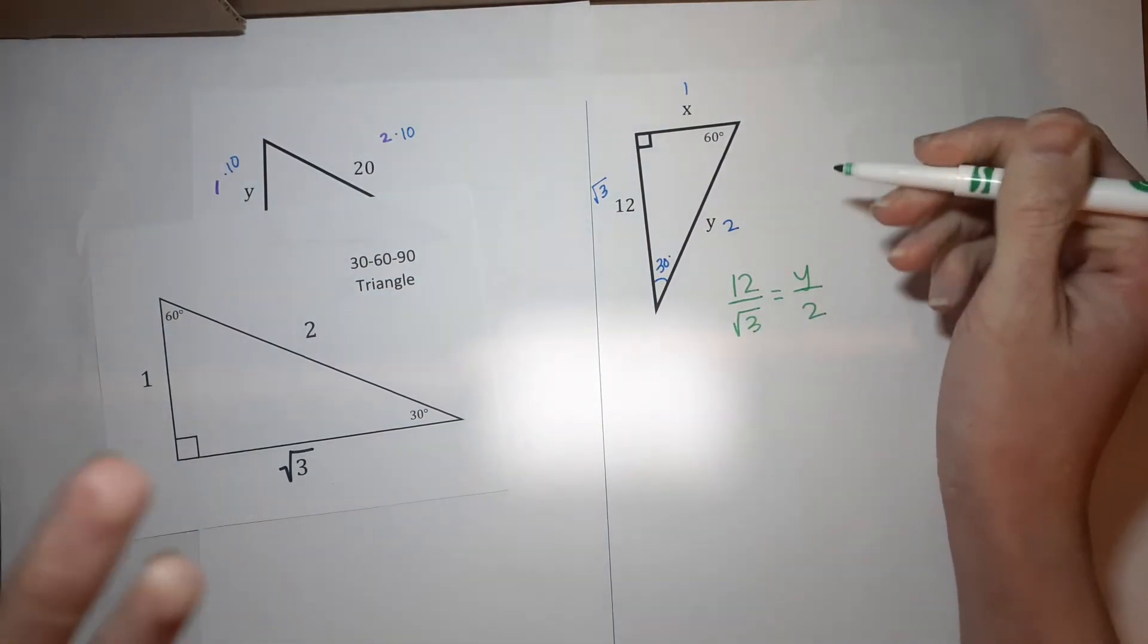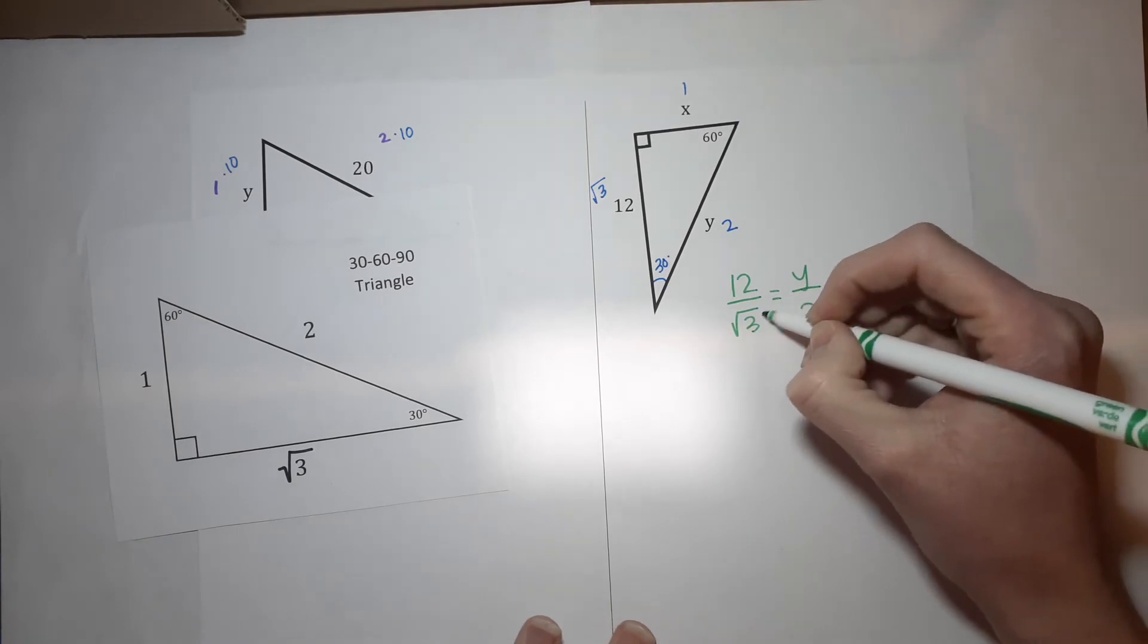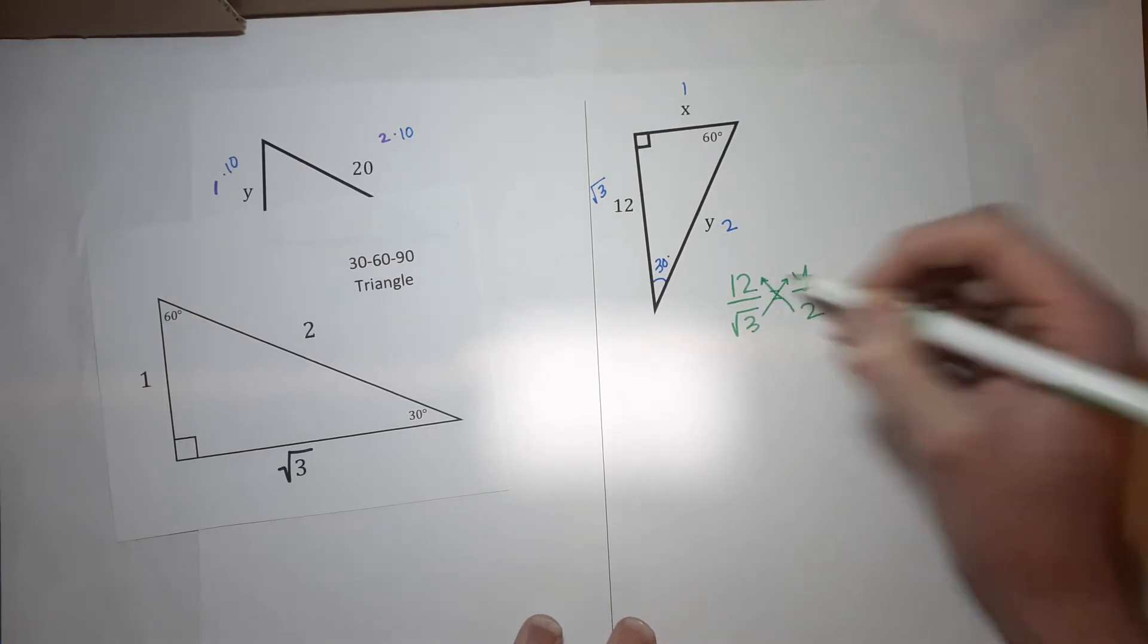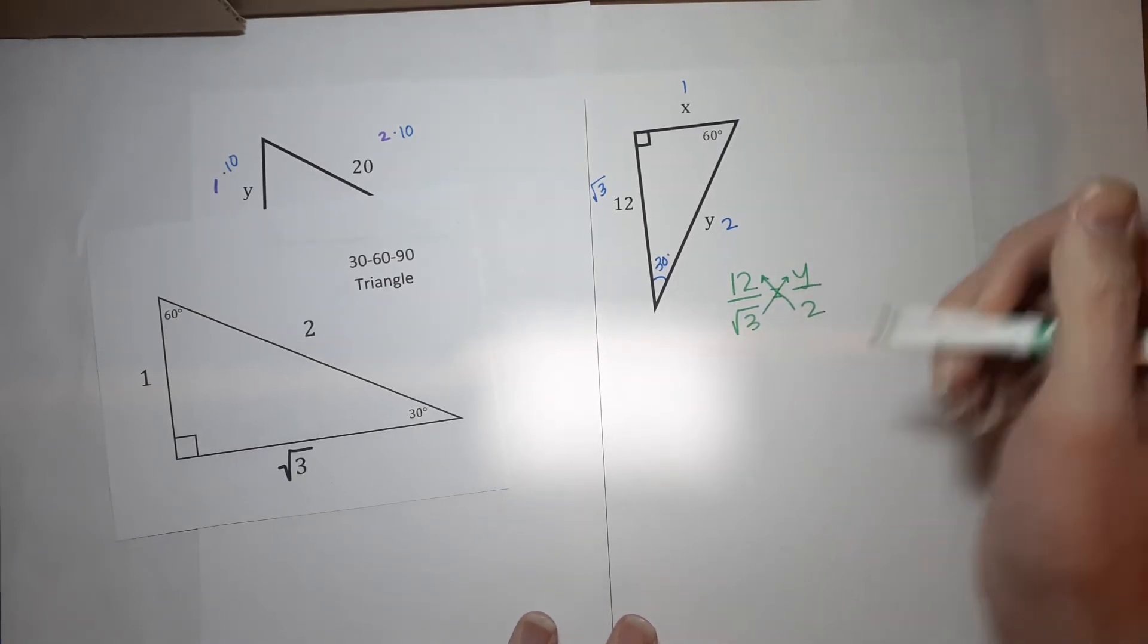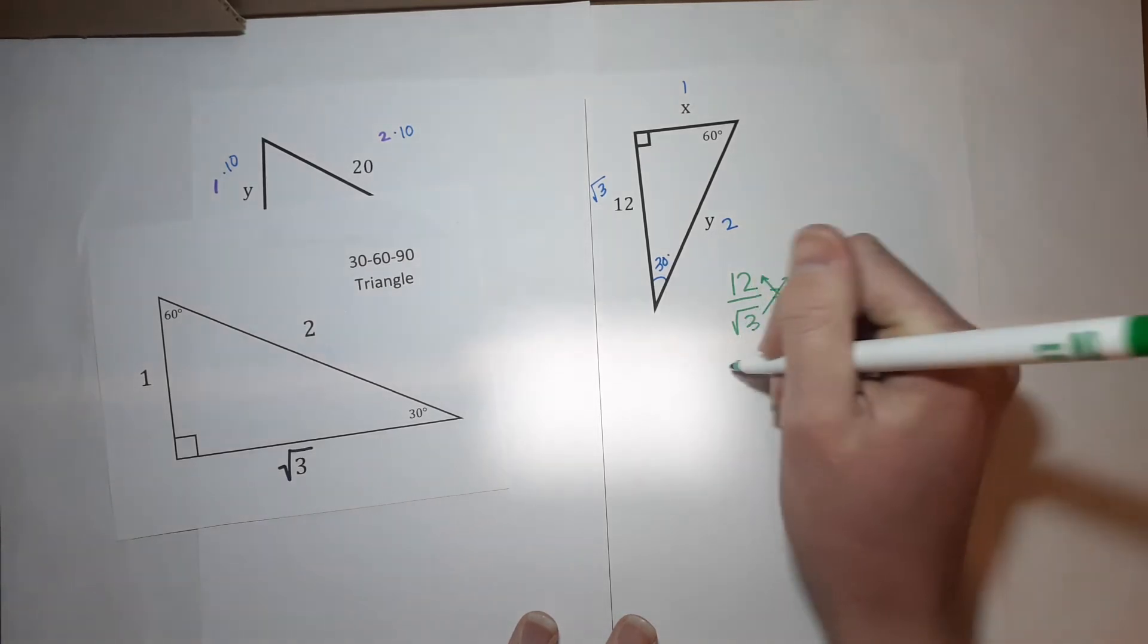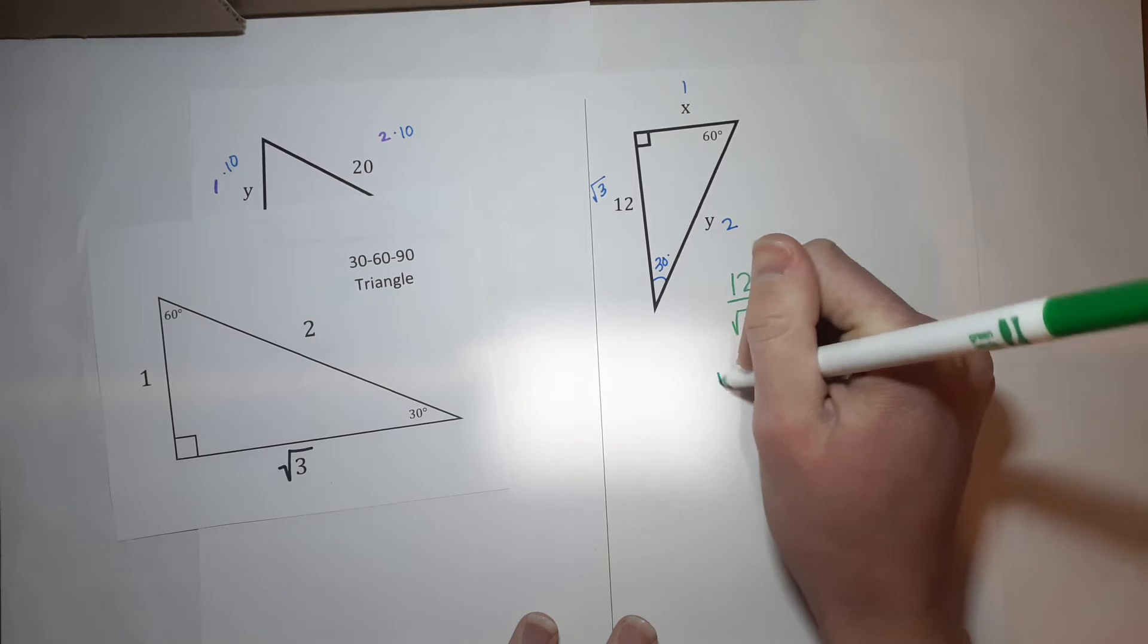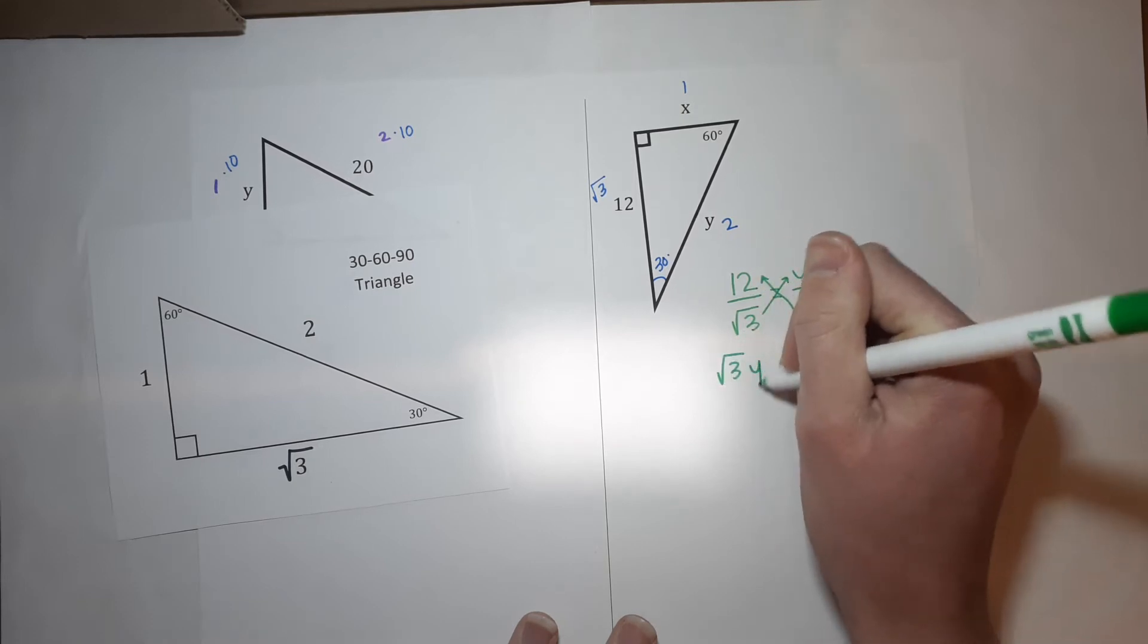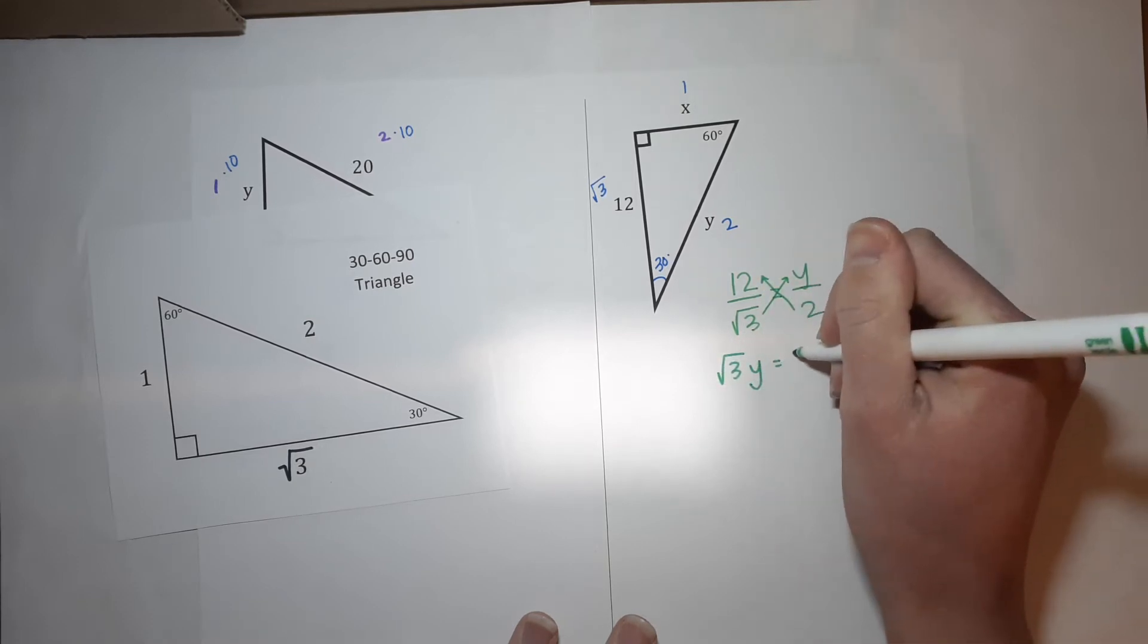Now, how do I solve this proportion? I am going to cross multiply. So, y times the square root of 3, sorry, square root of 3 times y equals 12 times 2 is 24.